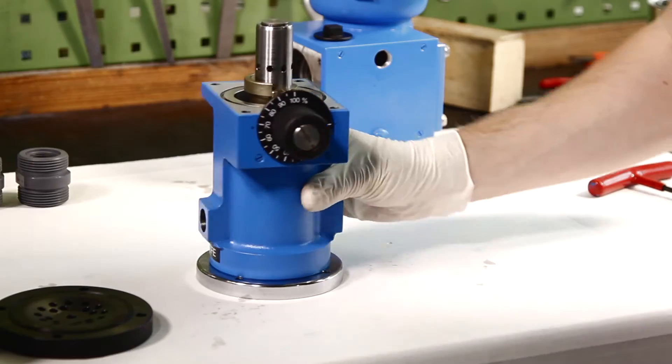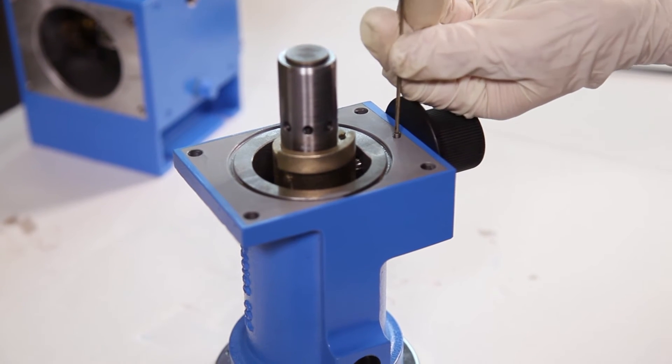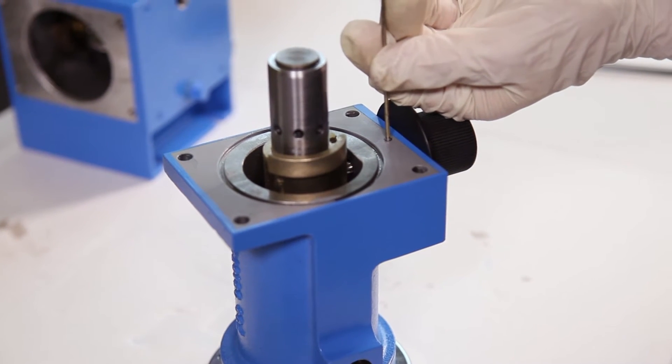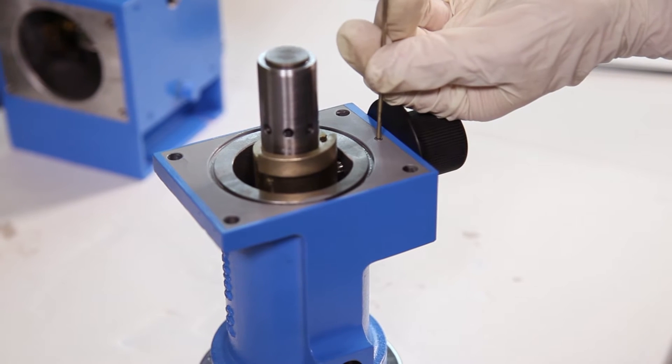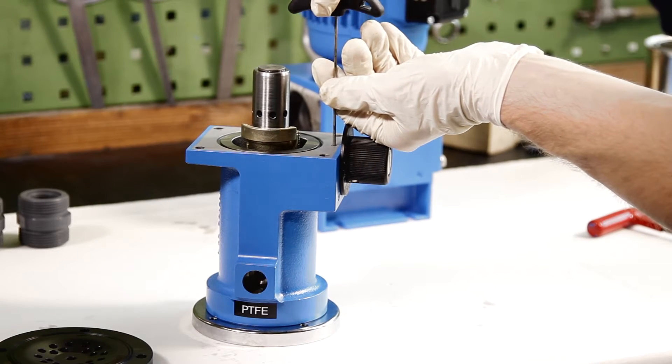The adjusting spindle is positioned by the grub screw. Carefully tighten the grub screw until it stops. Then, turn it half a turn back again. The zero point of the scale is reset during commissioning.